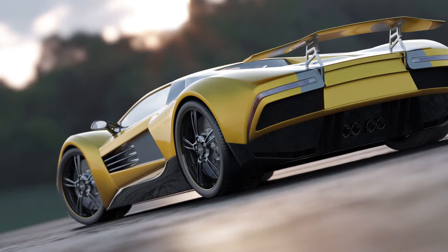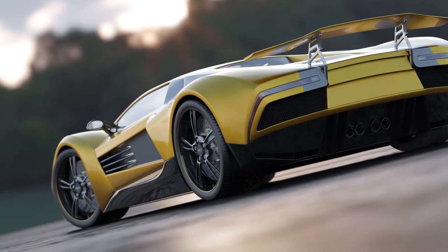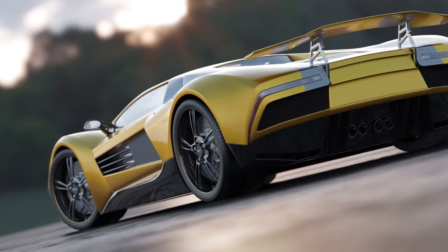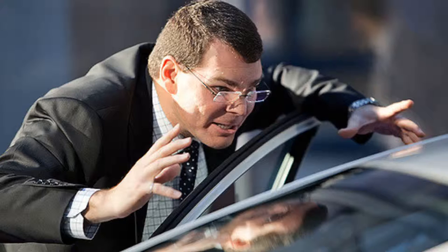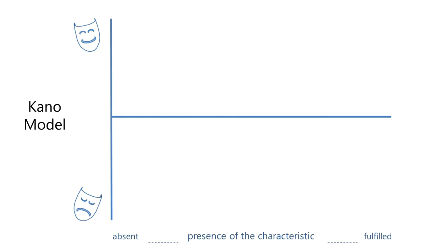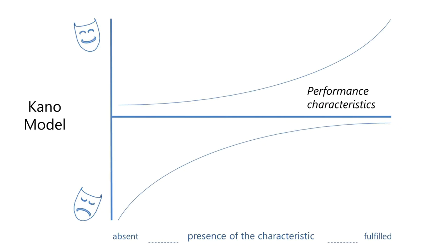If you do market research and talk to customers about what they would like from their next car, they will tend to talk in these terms. They'll say, well, it would be great if only it was a bit quieter, if only it was a bit bigger, or whatever. And so we call these things performance factors. On our x-y chart, they go from bottom left to top right. If we're not providing things, that causes dissatisfaction; on the right-hand side, where we are providing more of these features, that causes more satisfaction.